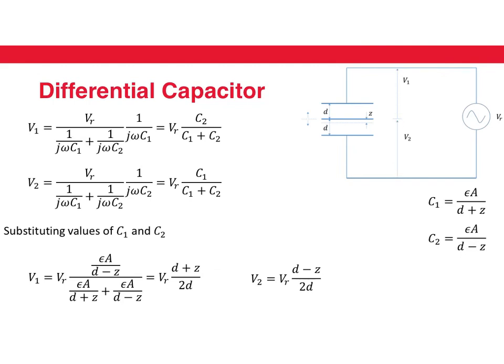Writing the equations for v1 and v2 and substituting the values of C1 and C2, we get v1 as vR times (d plus z) over 2d, and v2 as vR times (d minus z) over 2d.